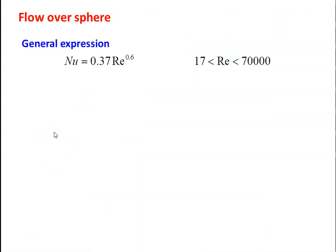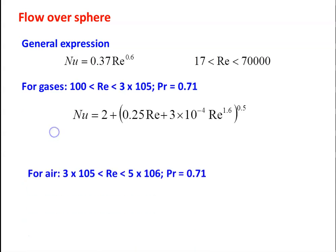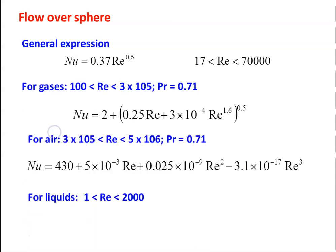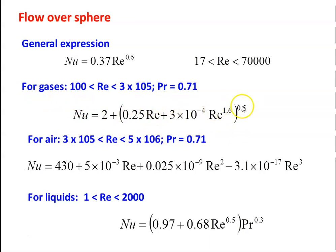For flow over a sphere, the general expression is Nu = 0.37 × Re^0.6. Specific equations are available for gases, air, and liquids. Depending on the type of fluid, select the appropriate Nusselt equation. All equations are available in the heat and mass transfer data book.